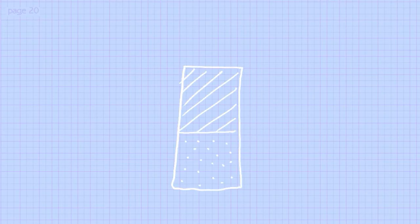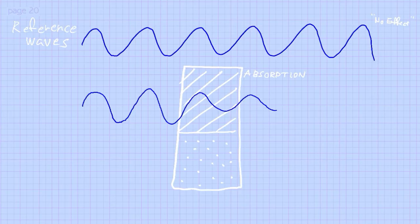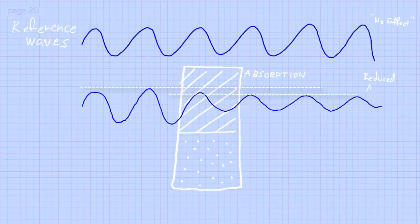I will show you a detailed sketch about this. First I draw a reference wave that passes through nothing — no effect, just light passing through. Then I draw a second ray of light that goes through a sample that absorbs part of it. When it goes through, part of it is absorbed and the amplitude of the wave is therefore smaller.